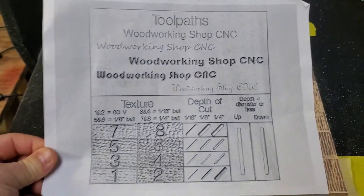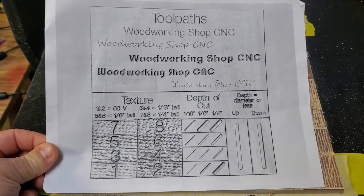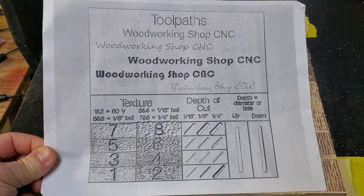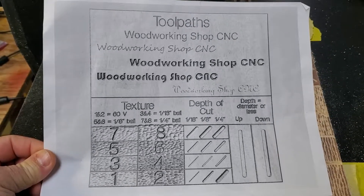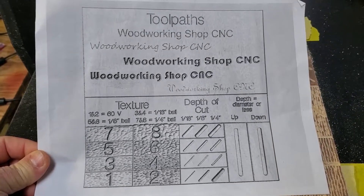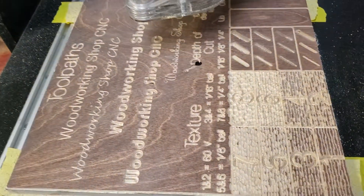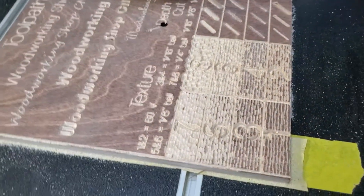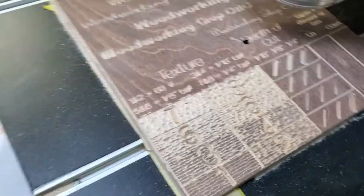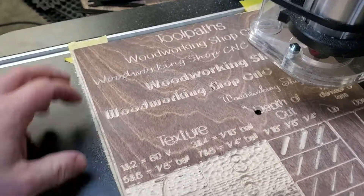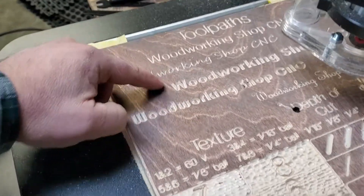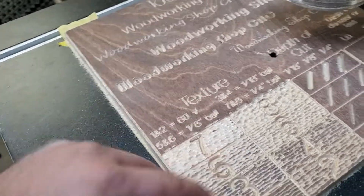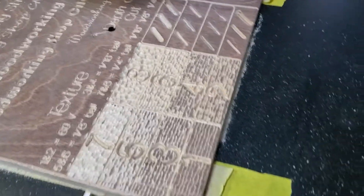I've got my job sheet printed out. This is kind of what we're going for here - just a little toolpath display board to show what each bit will do. I've got a few of them already knocked out, and as you can see, the different toolpaths. I've got different fonts down here and some texture options.